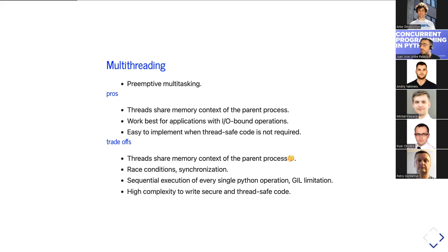That waiting for something is called an I/O-bound operation. Multi-threading tries to solve cases when the program is not executing pure Python code, but waiting for an external service response — that's an I/O-bound operation. Regarding memory: threads share the memory context of the parent process. All threads can read or update global variables and shared objects.